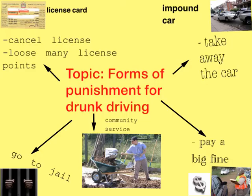Now is your opportunity to write a paragraph on our topic: forms of punishment for drunk driving. Remember — first, choose a form of punishment, then think of three reasons why you would punish a drunk driver in this way. Also, get one or two examples for using in your paragraph. Alright, start writing.